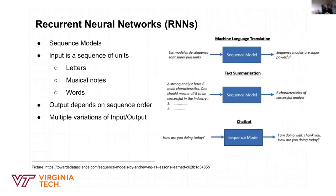Recurrent neural networks deal with sequence models. Unlike housing problem features such as bedrooms and bathrooms, which are independent, sequences like text, musical notes, or words require understanding the context of previous elements. To understand the fifth word, you need to know what was meant by the previous words. Sometimes you also need to understand the first word based on the nth word — it works in both directions. This is where recurrent neural networks are needed to process sequences.